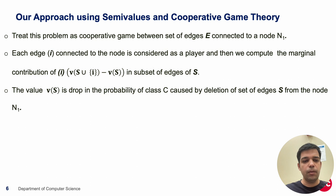The value V(S) is the drop in the probability of class C caused by deletion of set of edges S from the node N1.